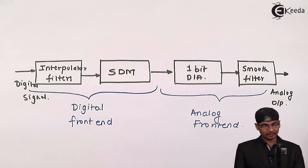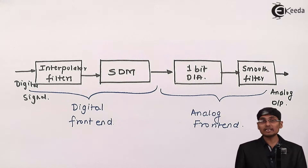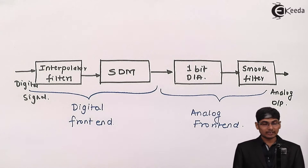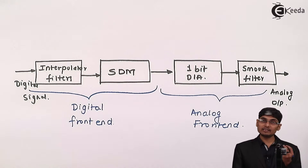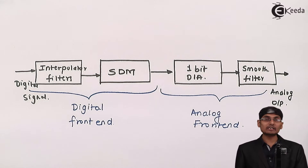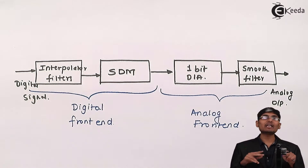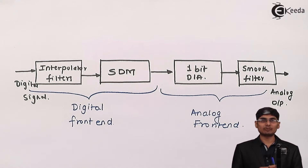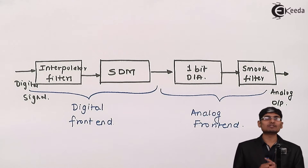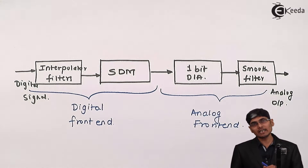The digital frontend consists of an interpolator and its associated filters. The interpolator takes the digital signal, inserts i minus 1 zeros, and increases the sampling rate. Due to the increase in sampling rate, the spectrum is squeezed and we get images of the spectrum. To remove those images of the spectrum, we use filters after interpolation.